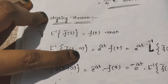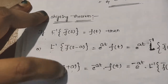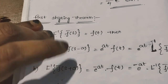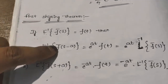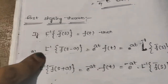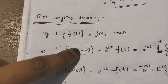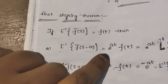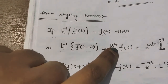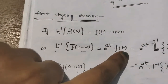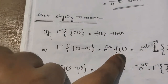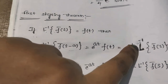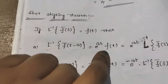This involves S plus A or S minus A — it has two conditions. It is defined as follows: L-inverse of f̄(s minus a) is equal to e^(at) into f(t).